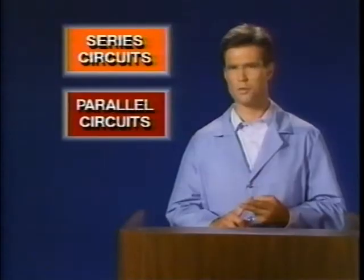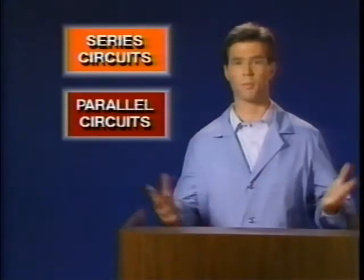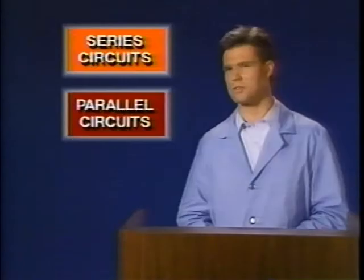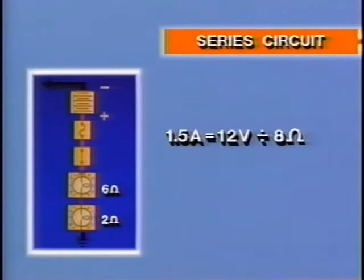Now that all the electrical building blocks are identified, let's see how they can be arranged. The series circuit and the parallel circuit are the two basic circuit types that form the backbone of every circuit. In a series circuit, the current starts at the battery, goes through the switch and load devices — in this case two lamps — then to ground. If the switch is open or there is a break in the circuit, the lamps go out. An application of Ohm's law shows that current is the same throughout a series circuit.